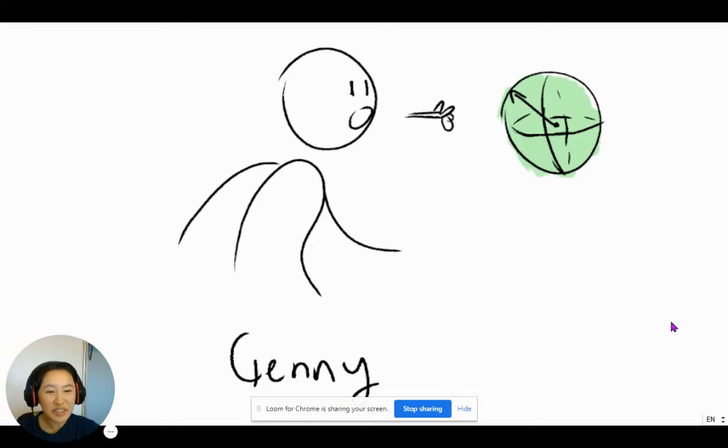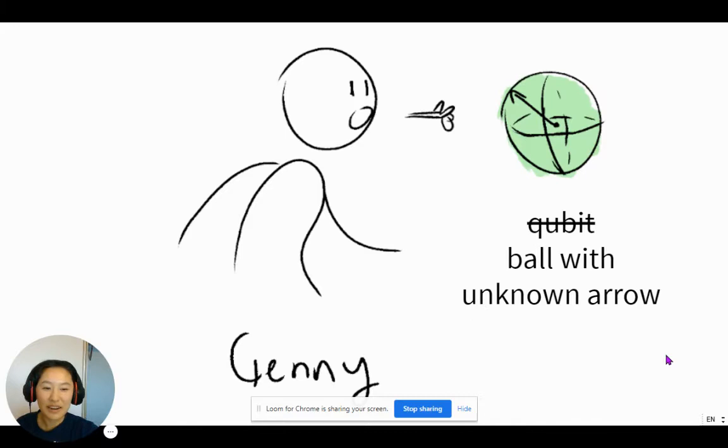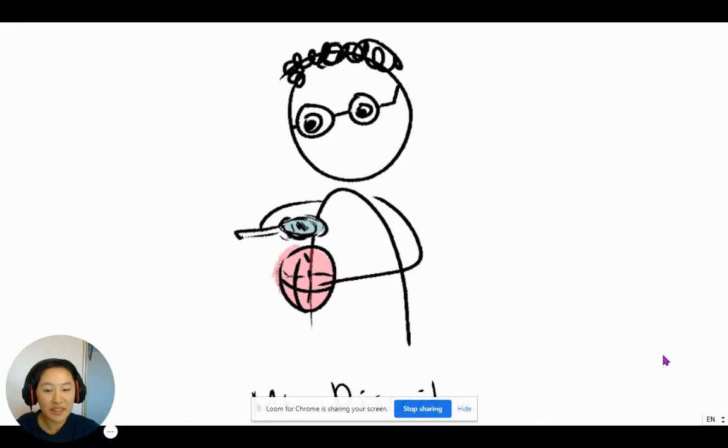Jennie, just like all five-year-olds, has his own quirk. And Jennie's quirk is that he spits out random qubits. And I don't like the word qubits, actually. Let's call them what they are: balls with unknown arrows.